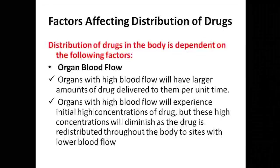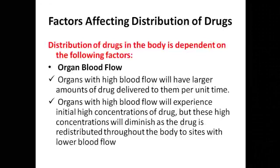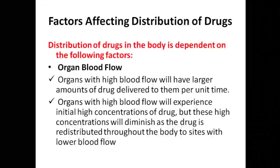Factors affecting distribution of drugs: distribution of drugs in the body is dependent on the following factors. First, organ blood flow — organs with high blood flow have large amounts of drug delivered to them at one time. These organs will experience an initial high concentration of drugs, but this high concentration will diminish as the drug is distributed throughout the body to sites with lower blood flow.